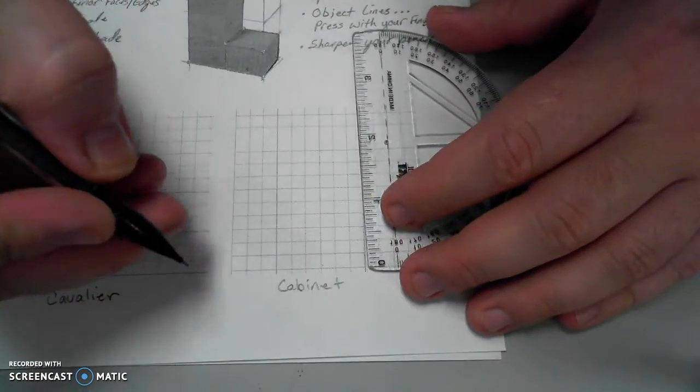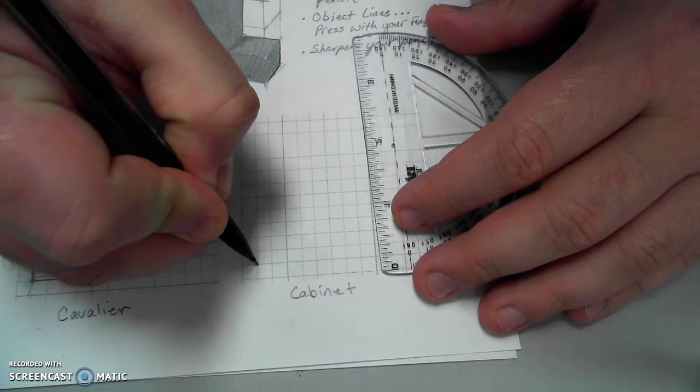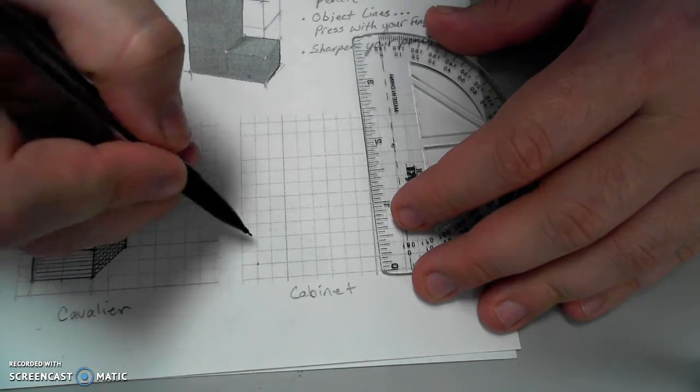All right, so the cabinet is the same as the Cavalier. It's just half the depth, so I'll set it up and do it the exact same way.